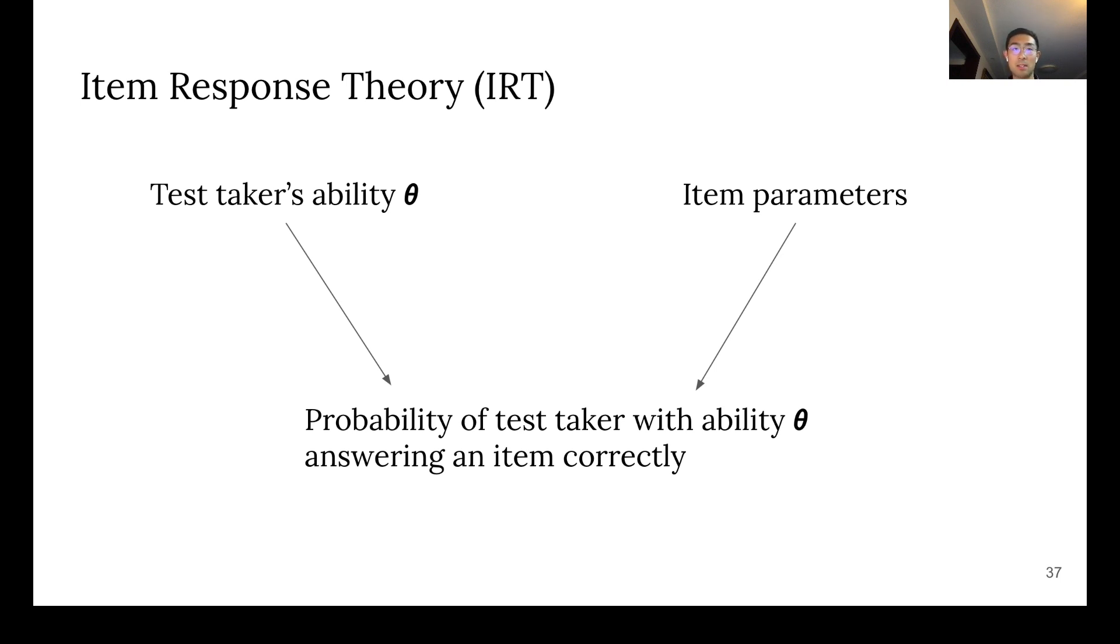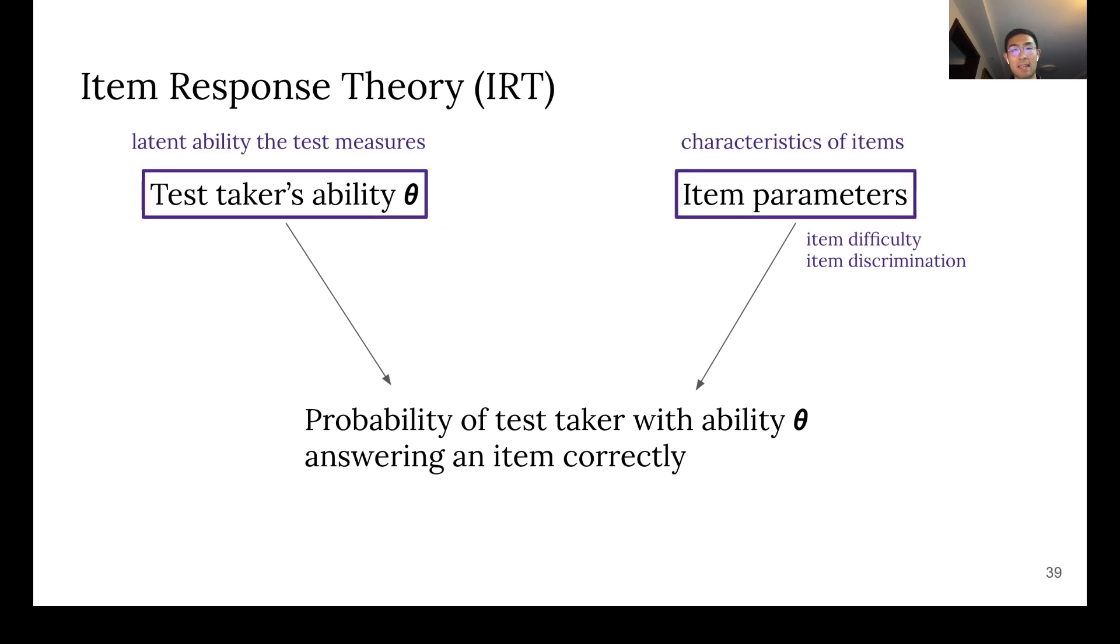The mathematical model that formalizes adaptive testing is called item response theory. It describes the relationship between a test taker's ability, item parameters, and the probability of test taker with ability theta answering an item correctly. For more technical details, please read our full paper.